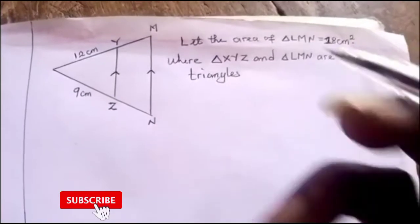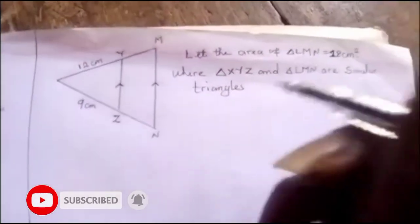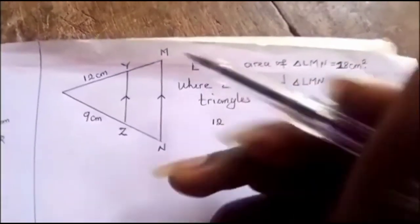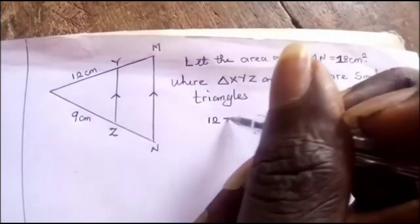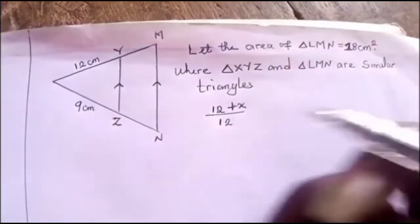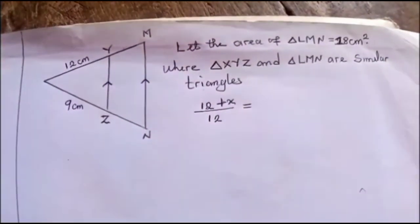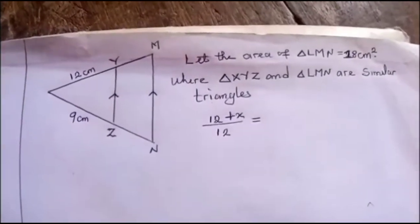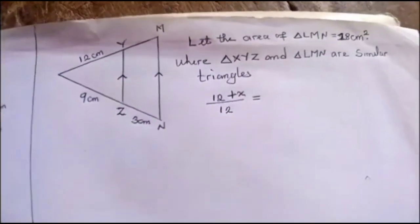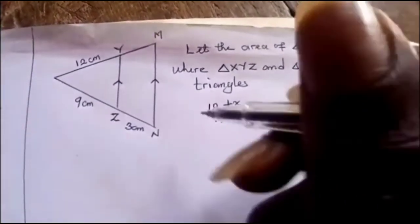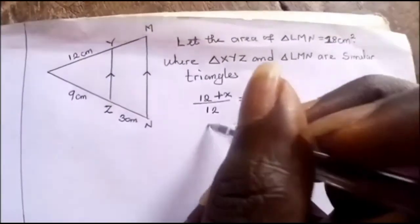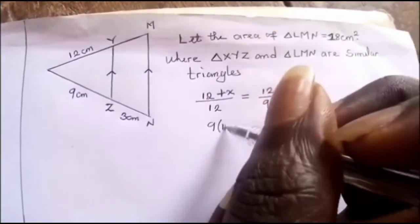So we can say that the ratio of this will give us 12 plus x over 12 equal to... Let this side become 3 centimeters, so we have 3 plus 9, that's 12, all over 9. So cross multiply, I have 9 times (12 plus x) goes to 12 times 12.